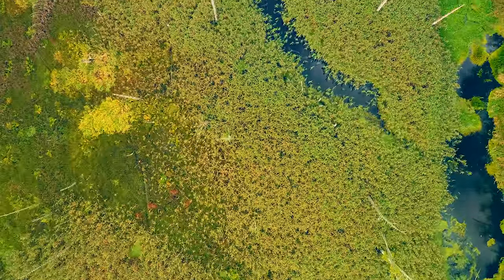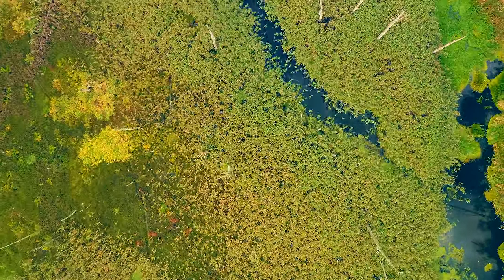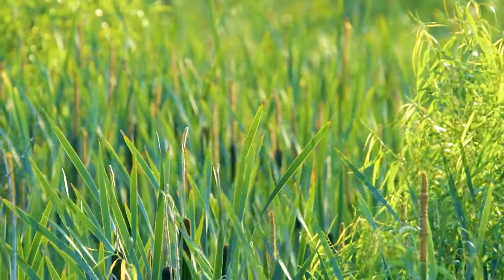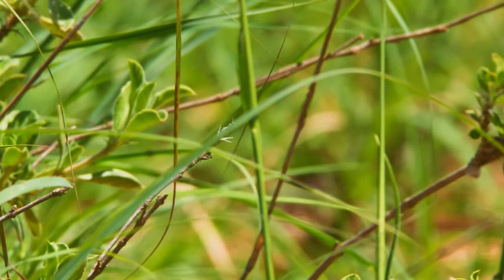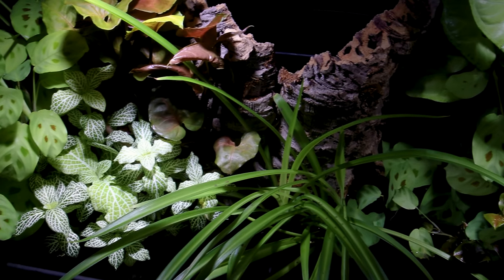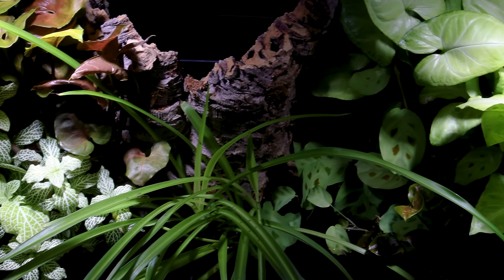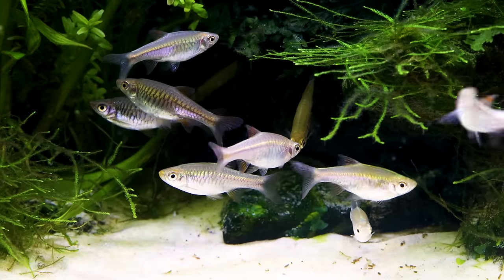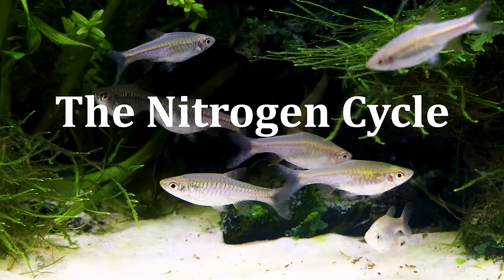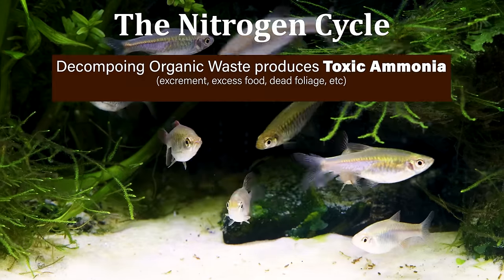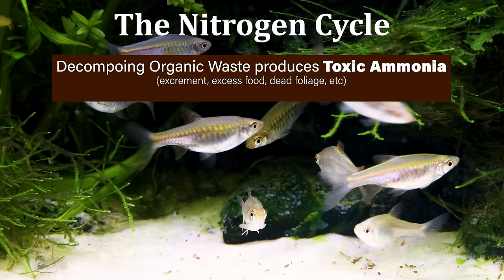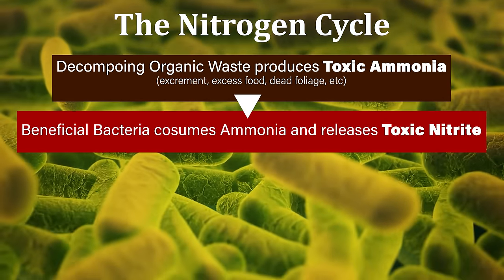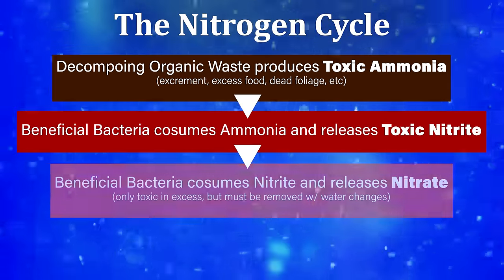The setups designed to mimic the areas in the riparian zones help us understand why we should incorporate marginal plants beyond aesthetics. In nature, these zones act as a biofilter and are crucial for water quality. The plants sequester impurities that would otherwise foul the water. If you've been keeping fish for any length of time, I'm sure you know about the nitrogen cycle. Organic waste within the system produces ammonia, which is toxic to livestock. Beneficial bacteria consume this and release nitrite, which is also toxic.